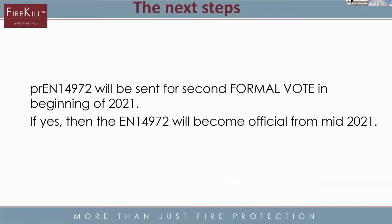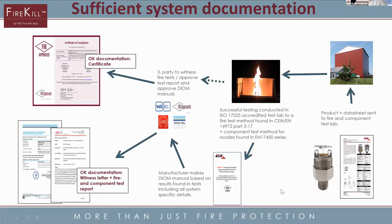The next step for EN 14972 will be that it goes out for a formal vote, probably at the beginning of 2021. If it ends up with a yes, then hopefully we will have an official European standard to go on with. How do you work with it? You start with a product, go to the ISO 17025 accredited test lab, choose a fire test method found in parts 2 to 17, do some component testing as well, and from these tests you make your DIOM. Everything you find in the fire testing and component testing will be reflected in the DIOM — the design, install, operation, and maintenance manual.